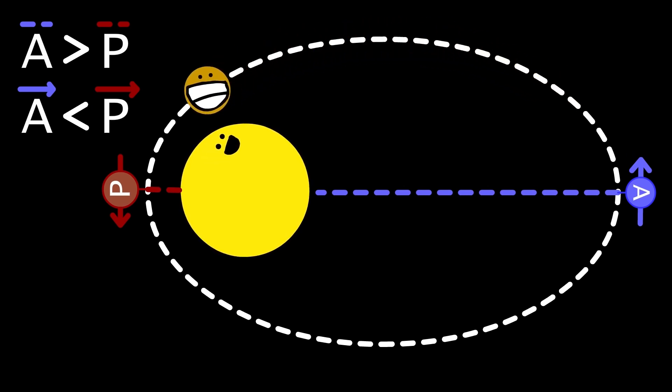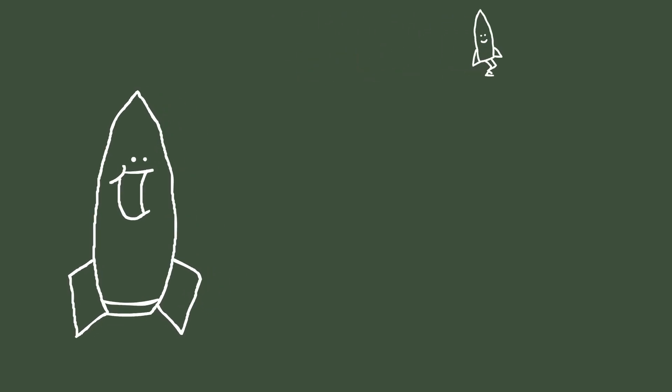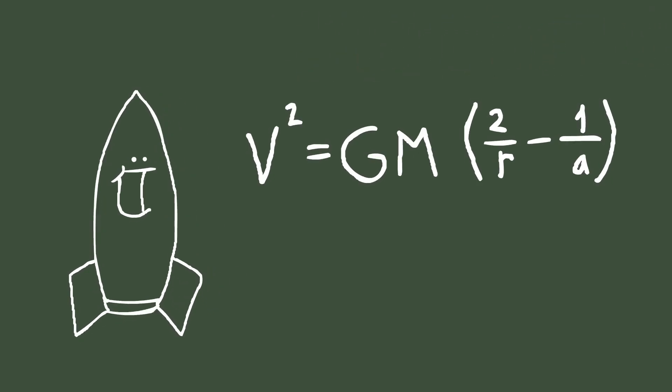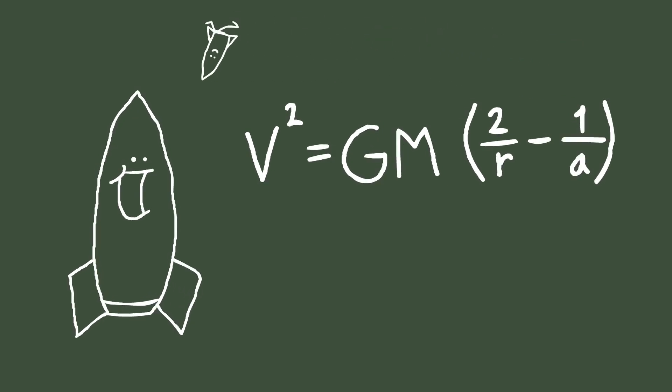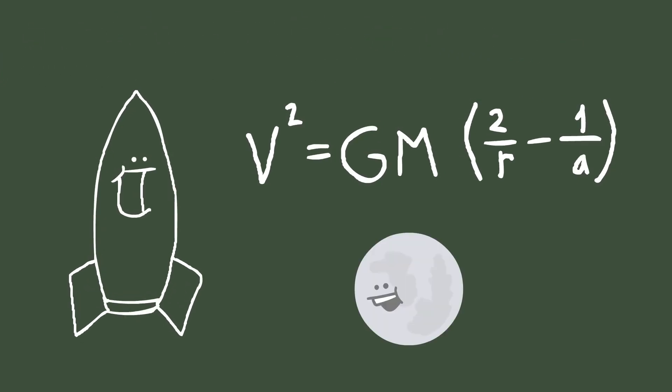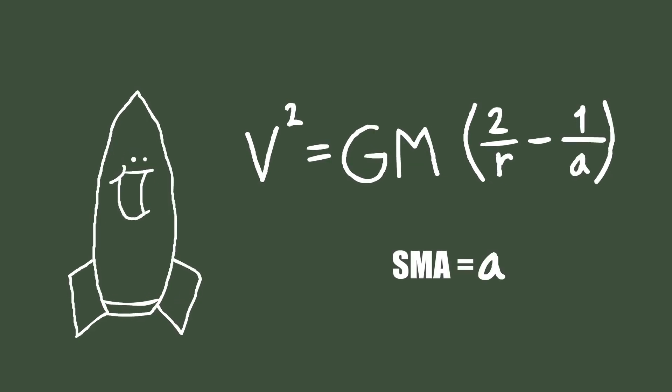The average distance of the periapsis and the apoapsis is called the semi-major axis. This value is helpful when doing math. You can find your velocity on any complete orbit with this equation. V is velocity. G is the universal gravitational constant. M is the mass of the body. R is your current altitude. And A is the semi-major axis, like we saw before.